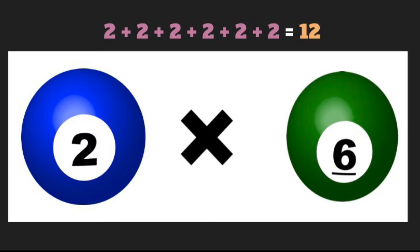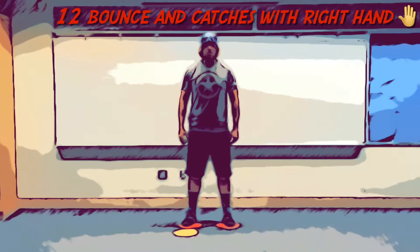2 times 6 equals... 1, 2, 3, 4, 5, 6, 7, 8, 9, 10, 11, 12.